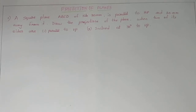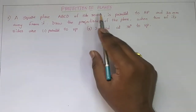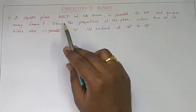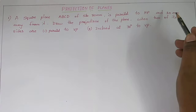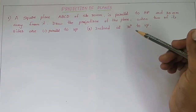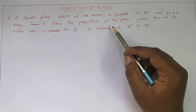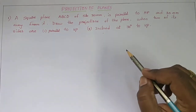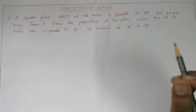Good morning. Today I am going to discuss problems regarding the position of planes. The problem given is that a square plane ABCD of side 30 mm is parallel to HP and 20 mm away from it. Draw the projections of the plane when two of its sides are parallel to VP and inclined to HP.